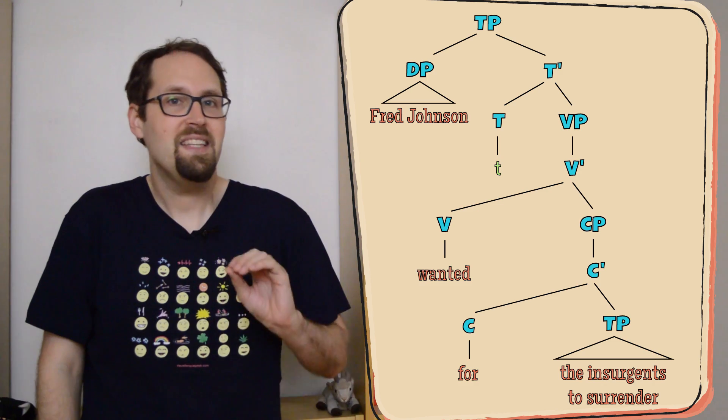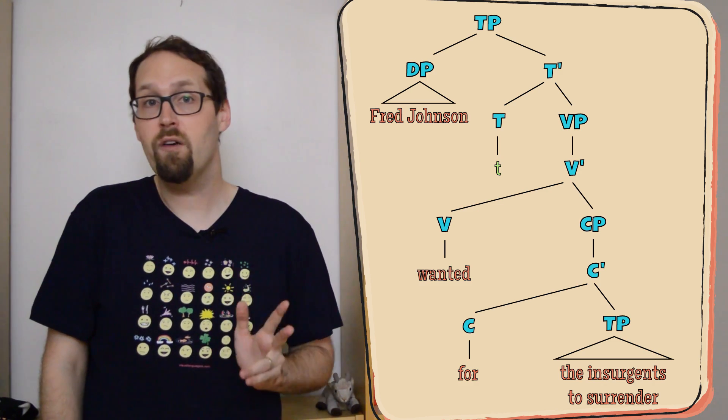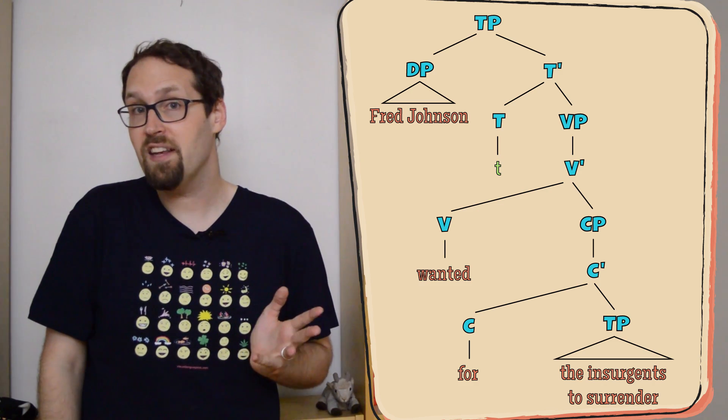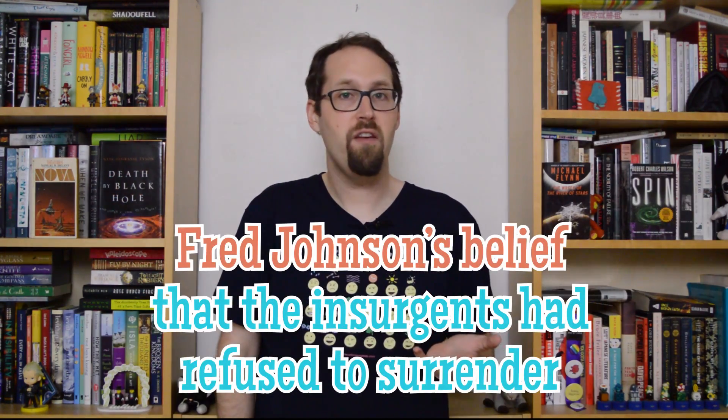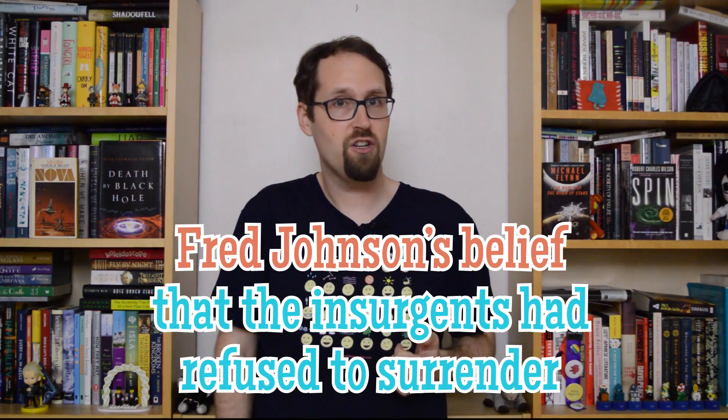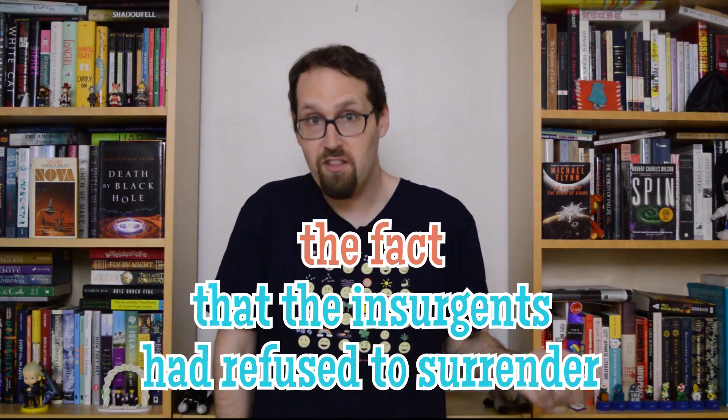CPs often live inside verb phrases, as one of the ways a predicate can contain a clause. But it isn't only after certain verbs where we find these sorts of complement clauses. They show up after some nouns too, like fact, or belief, or idea. So, Fred Johnson's belief that the insurgents had refused to surrender, or the fact that they'd done so. And we can get clauses living inside subjects as well.